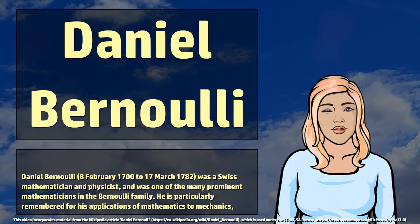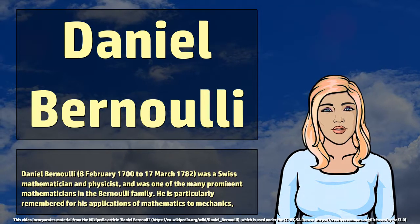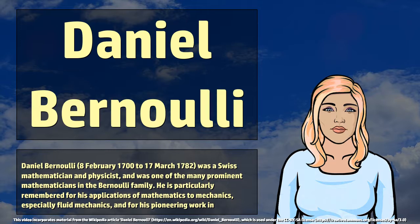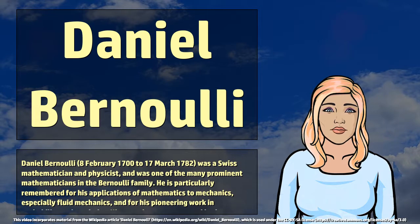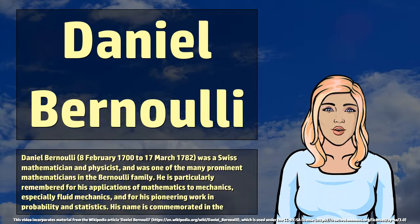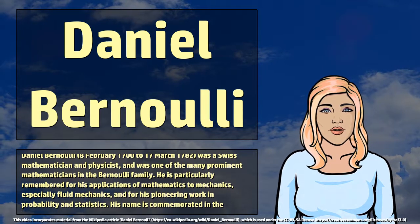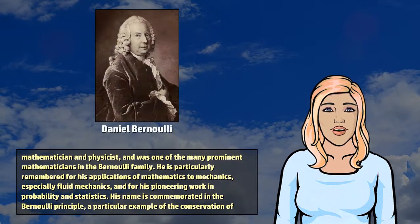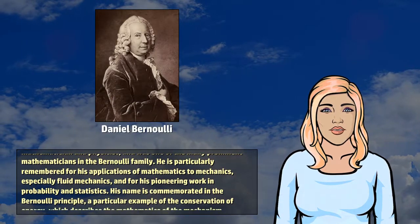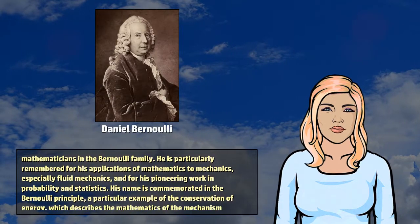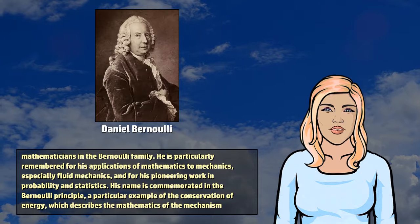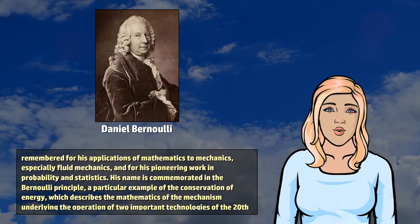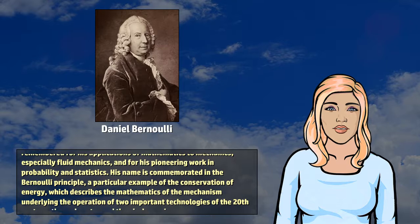Daniel Bernoulli, February 8, 1700 to March 17, 1782, was a Swiss mathematician and physicist, and was one of the many prominent mathematicians in the Bernoulli family. He is particularly remembered for his applications of mathematics to mechanics, especially fluid mechanics, and for his pioneering work in probability and statistics.